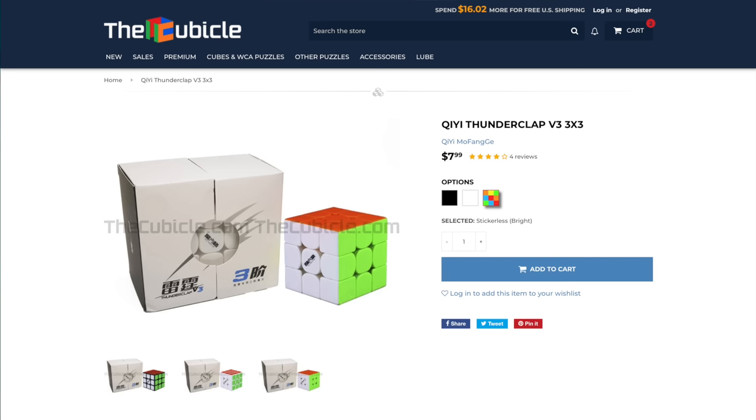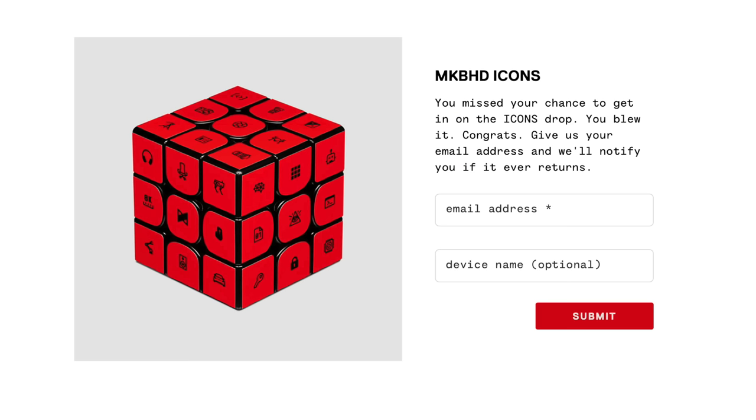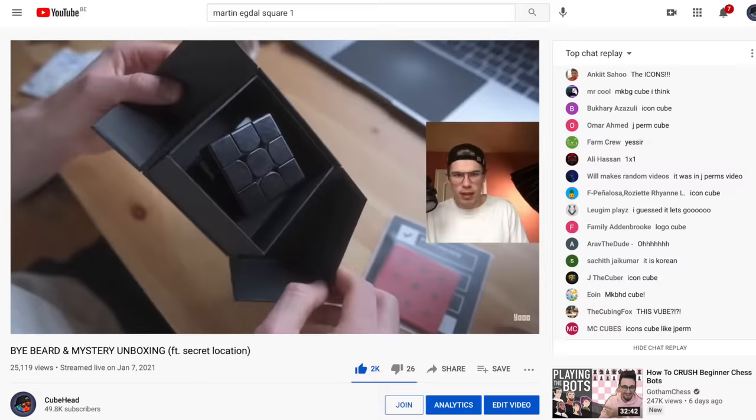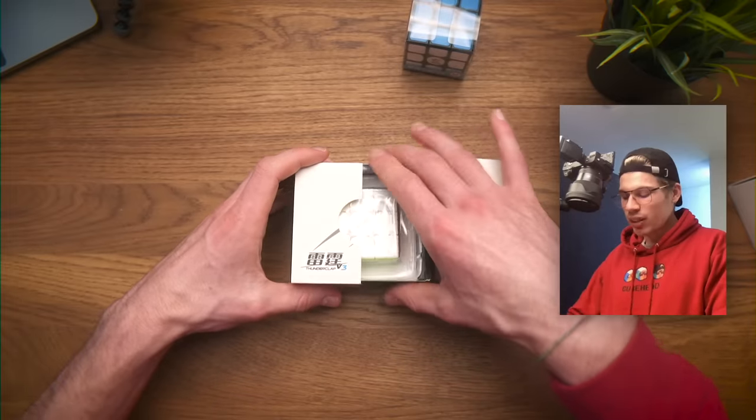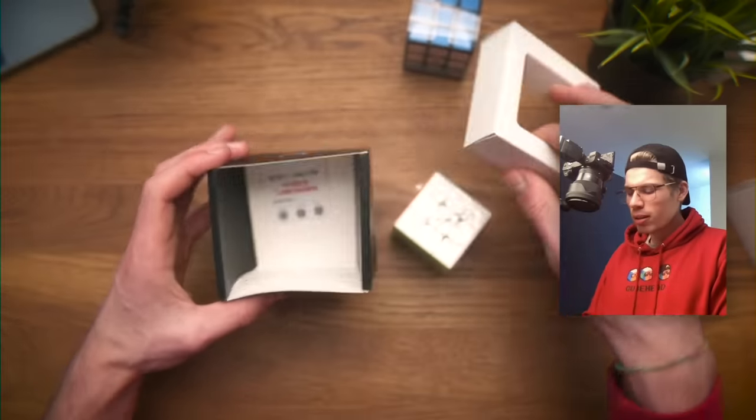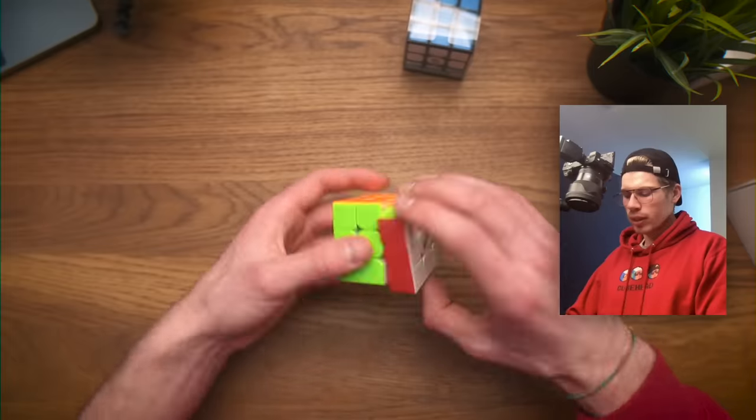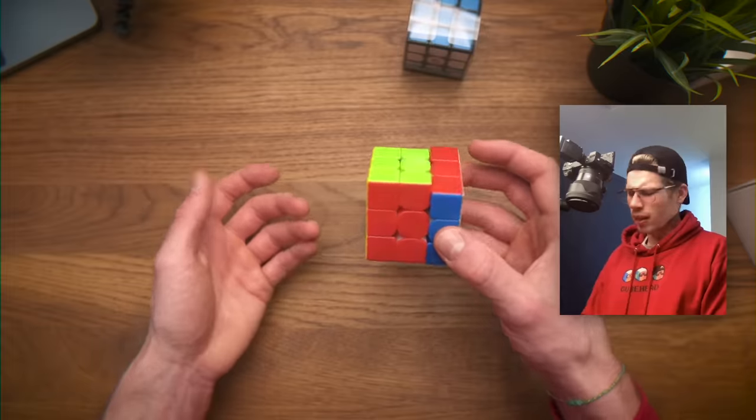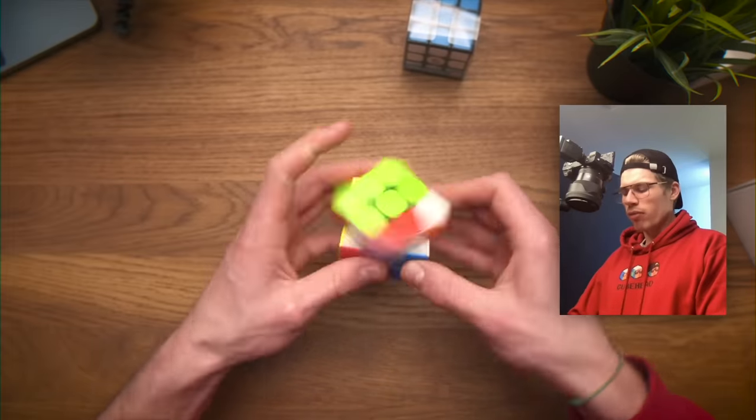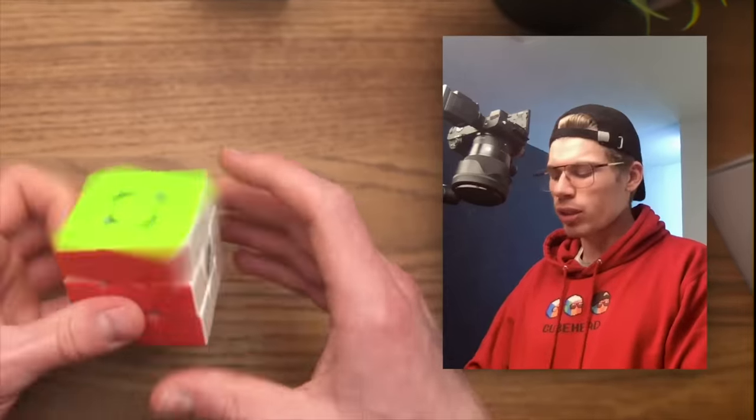Fun fact: this is a Thunderclap. I actually had my first Thunderclap which was the Marques Brownlee Icons cube. I did a live stream unboxing that one and solving it, but I've never actually had a normal Thunderclap. Let's try this one. Wait, this one is not magnetic. Is there a magnetic version?